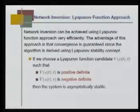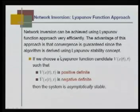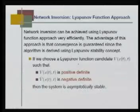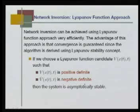The second approach is the Lyapunov function approach. Network inversion can be achieved using a Lyapunov function approach efficiently, and the advantage is that convergence is guaranteed since the algorithm is derived using Lyapunov stability concepts. Recall: if you choose a Lyapunov function candidate V such that V is positive definite and V-dot is negative definite, then the system is asymptotically stable.